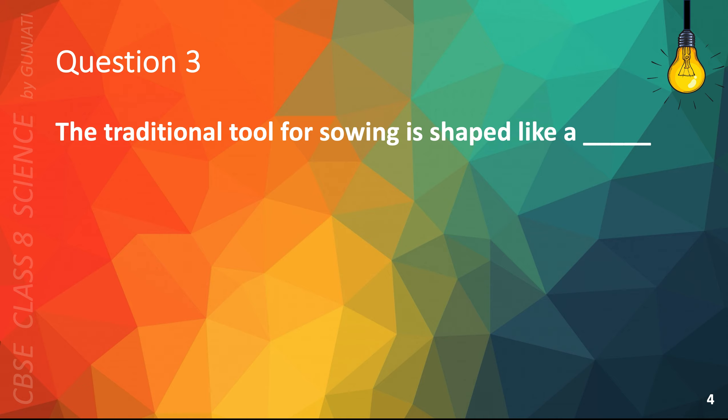Question 3. The traditional tool for sowing is shaped like A rectangle, B ball, C funnel, or D rod. The correct answer is C funnel.